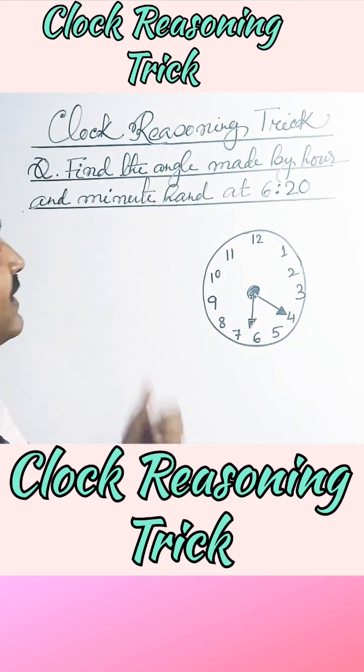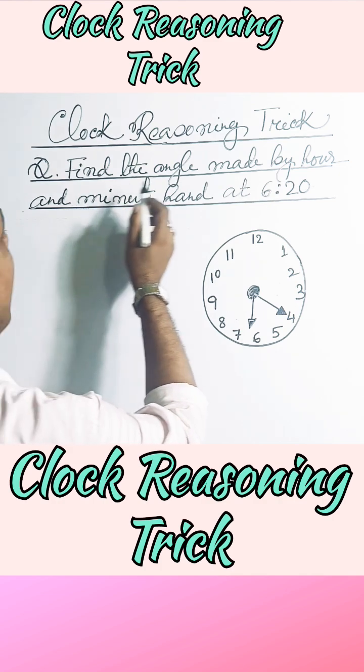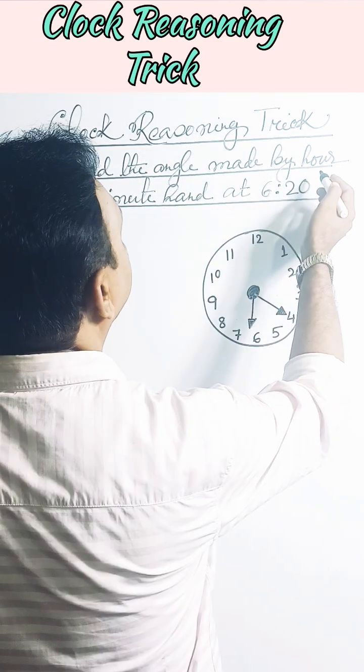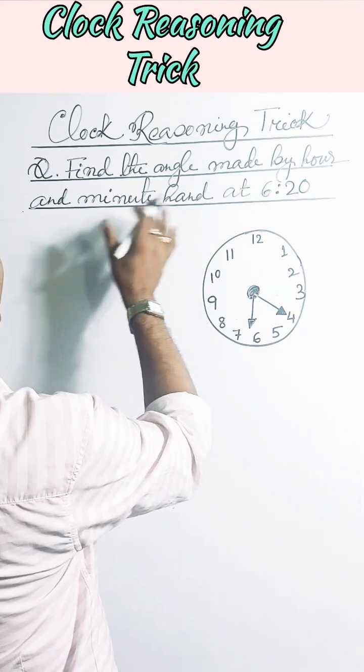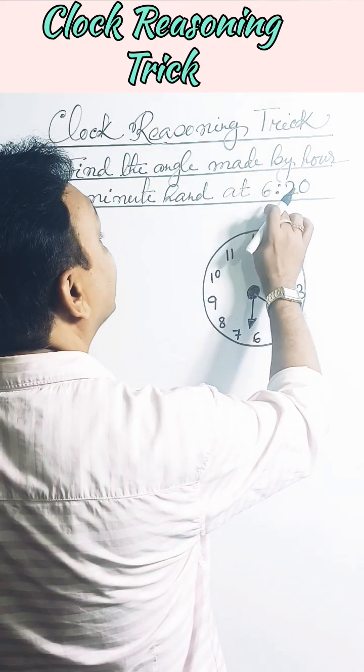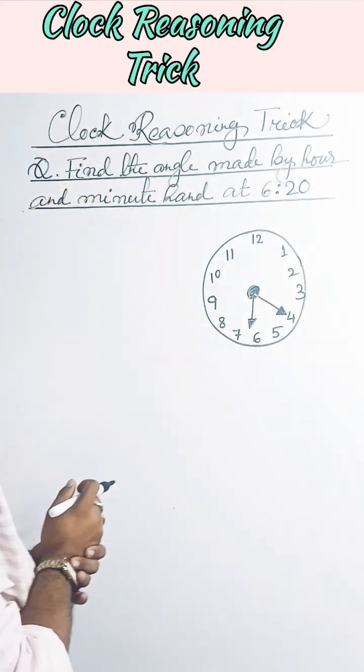You can see on the board, this is a very common question: Clock Reasoning Trick. Read the question carefully - find the angle made by the hour and minute hand at the time 6:20.